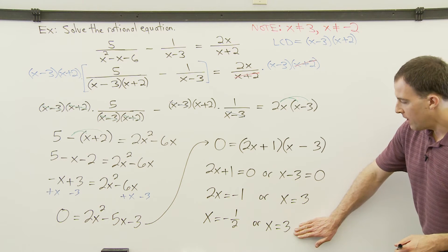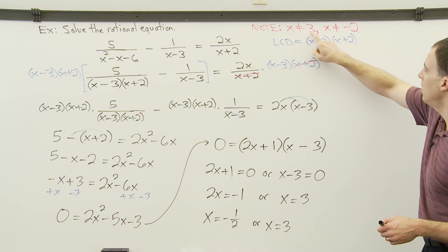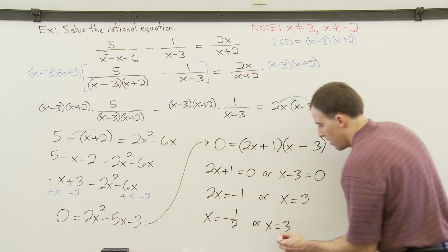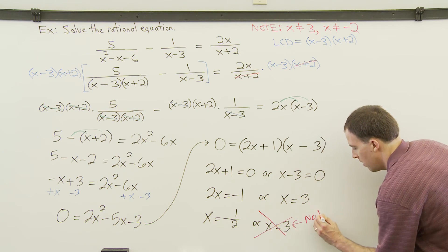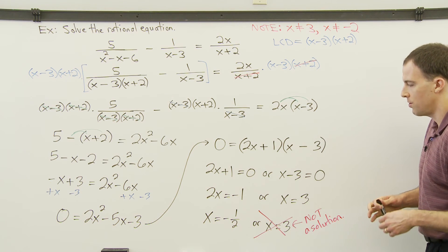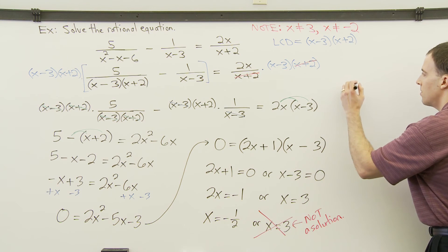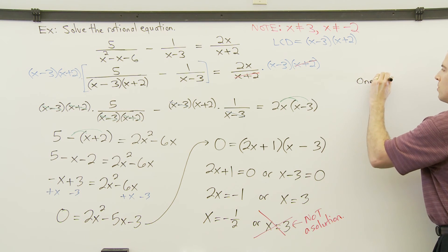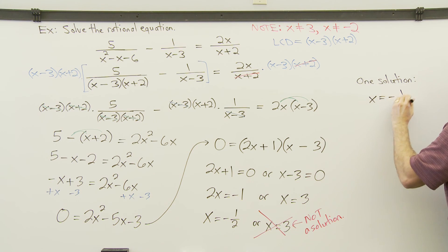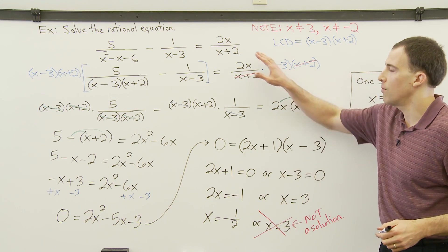These are possible answers, so we compare them to our restricted values. X cannot equal 3 and x cannot equal negative 2. We got x equals 3 as a solution, but since x can't equal 3, that answer is not allowed — it's referred to as an extraneous solution and is not listed in the solution set. Negative 1 half is okay because that value was not restricted. So there's only one solution: x equals negative 1 half. Make sure to check your answers when solving a rational equation to ensure they're valid and permitted in the original equation.